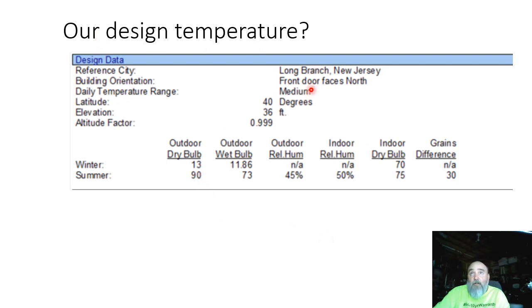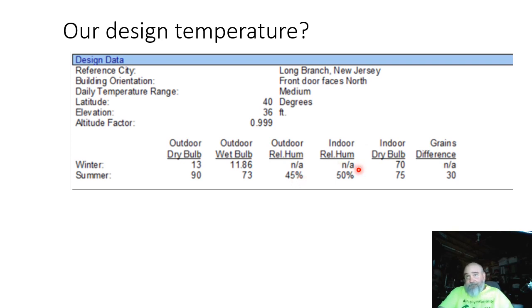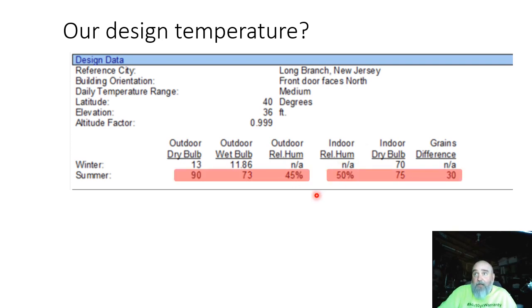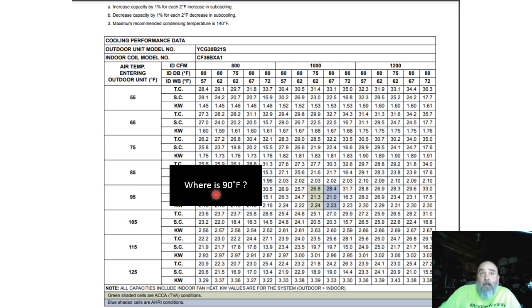Our design temperature — I used Long Branch, New Jersey because it's close to the host of the class I'm doing on Monday. 90°F is our summertime outdoor temperature, wet bulb 73°F. Outdoor humidity at 90°F is 45%. We're a green-grass climate: 75°F inside, 30 grains difference.